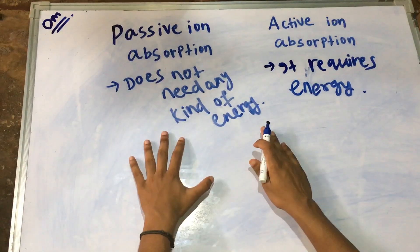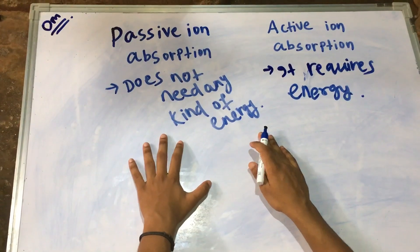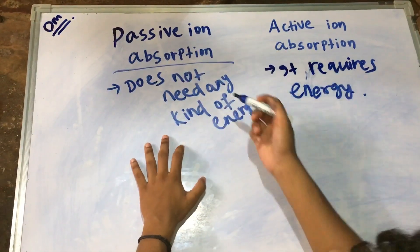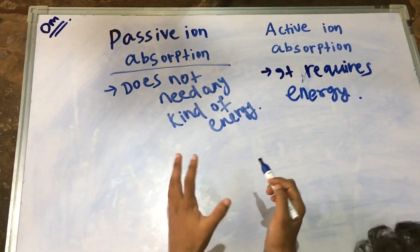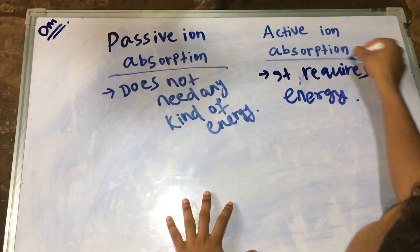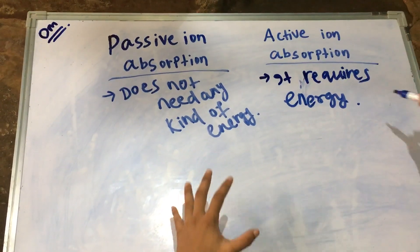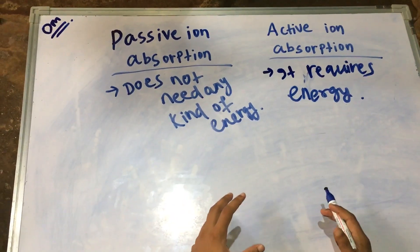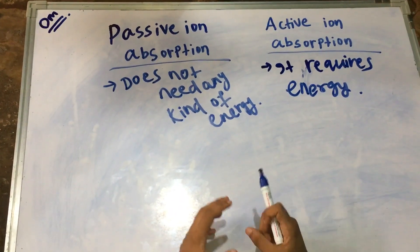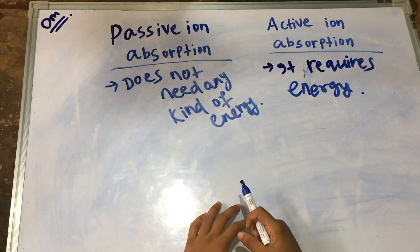This is the basic difference: passive ion absorption does not need any kind of energy, and active ion absorption needs energy for ion absorption.